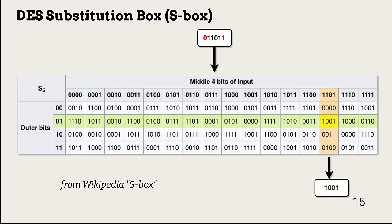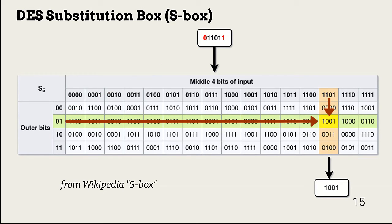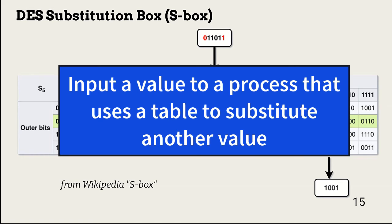This is an example of how an S-box works in DES. Six bits are presented to the process. The first and last bits are stripped — these are called the outer bits, and they're used for table row selection. The middle four bits are compared to the table column headers. When a match is made, the process moves to the row with the outer bit match, and the output is at the intersection. A substitution table in AES is generated during encryption and works a little differently, but the concept is the same: input a value to a process that uses a table to substitute another value.